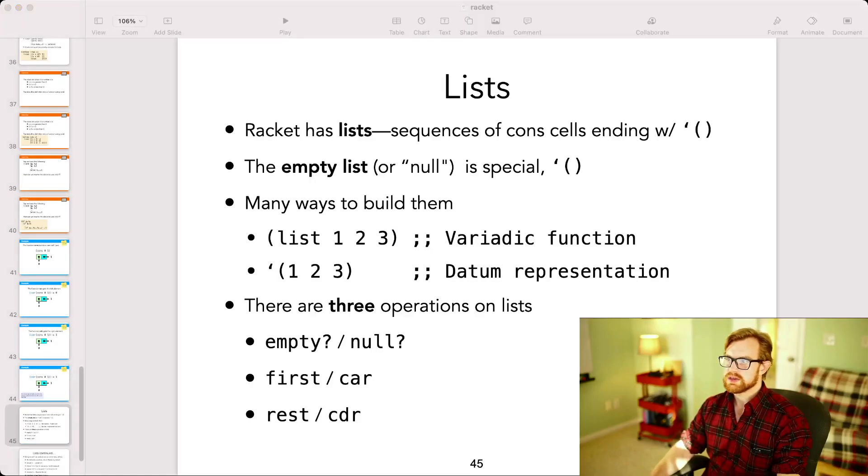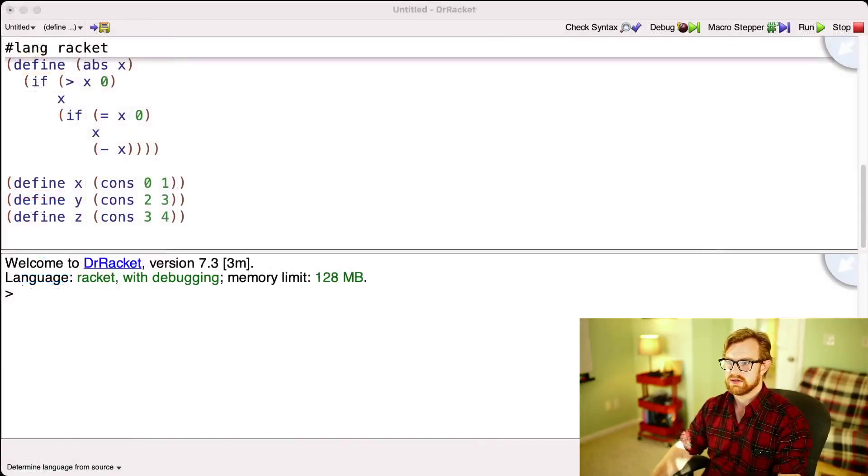So using cons cells, we can actually build out lists. And the reason we can do this is because we can also include one extra special element. We're also going to have the empty list. There's going to be a dedicated symbol that looks like this. This is how the empty list is written in Racket. We can also sometimes call it null. In other languages use the word null for a variety of reasons, so I try to avoid confusion and I'll often try to just say the empty list.